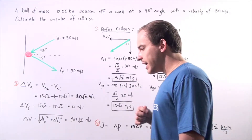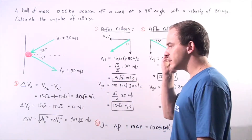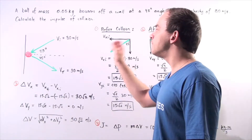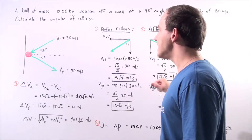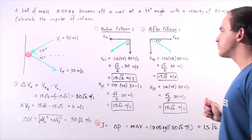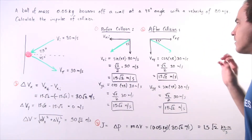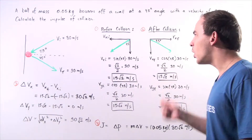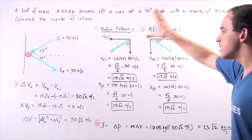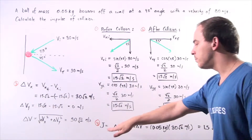In order to calculate the impulse of our collision, we have to calculate the change in momentum. And to calculate the change in momentum, we have to calculate the change in velocity, because momentum is equal to mass times velocity. We calculate the x and y component vectors before the collision, then the components after the collision, then use that information to calculate the change in velocity, and finally use the change in velocity to calculate our impulse or change in momentum.